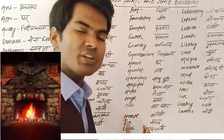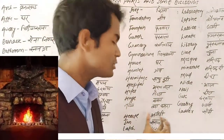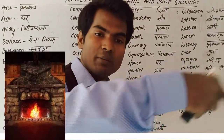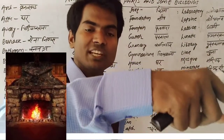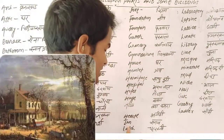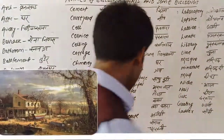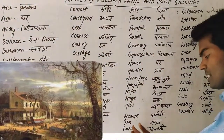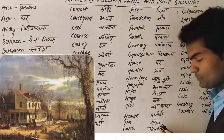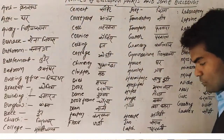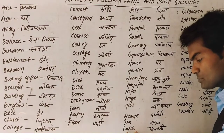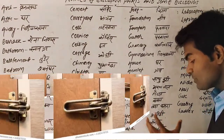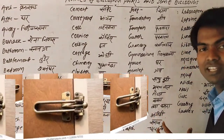Hearth — hearth ka matlab hota 'angeethi,' jisko aap bahut bada 'bhattha' bhi bol sakte hain. Inn — I-N-N, inn ka matlab hota hai 'sarai.' Latch — latch ka matlab hota 'chatkhanee.'